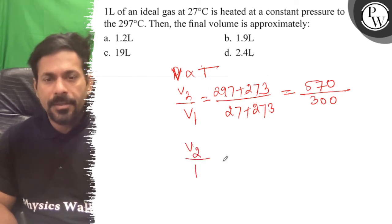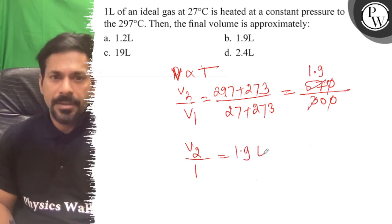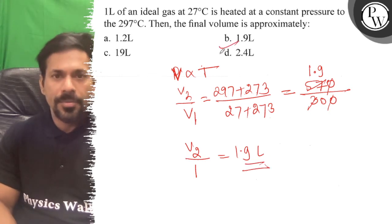V1 is 1 liter, so that equals 1.9. So 1.9 liters is the correct answer. Option B is correct. All the best.